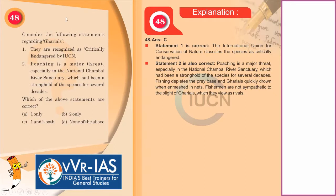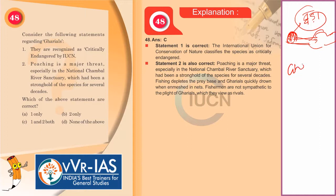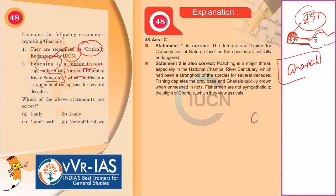The 48th question considers statements regarding ghariyals. Ghariyals are crocodile-like species distinguished from crocodiles by the famous ghada on their snouts — an inverted pot-shaped structure at the end of the snout from which the name 'ghariyal' is derived. Both statements given are correct: the IUCN has recognized the ghariyal as critically endangered, and these ghariyals are mostly found in the Chambal ravines. An important point about all crocodilian species — crocodiles, alligators, ghariyals — is that they cannot regulate body temperature internally and must come out into the open to bask in the sun.